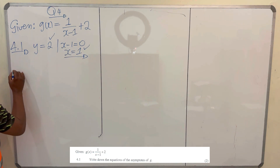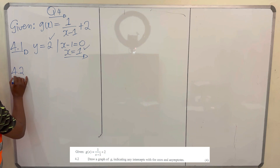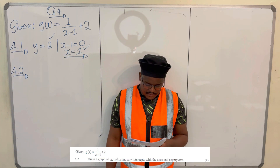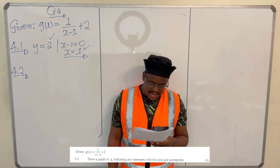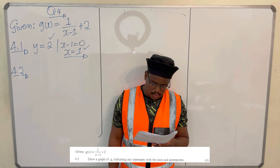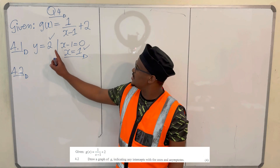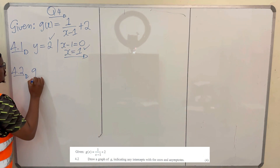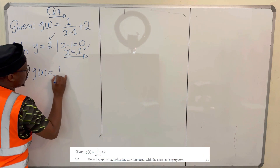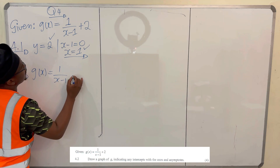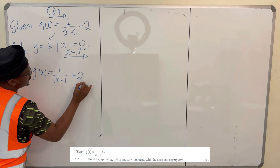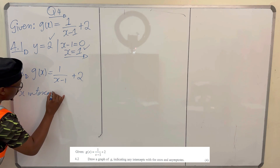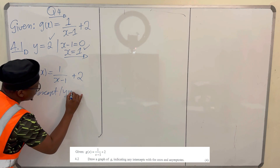And we're done there. Moving to 4.2: draw the graph of g indicating the intercepts with the x-axis, the y-axis, and the asymptotes. So they want us to plot g(x) = 1 over x minus 1 plus 2, showing the x-intercepts and y-intercepts.